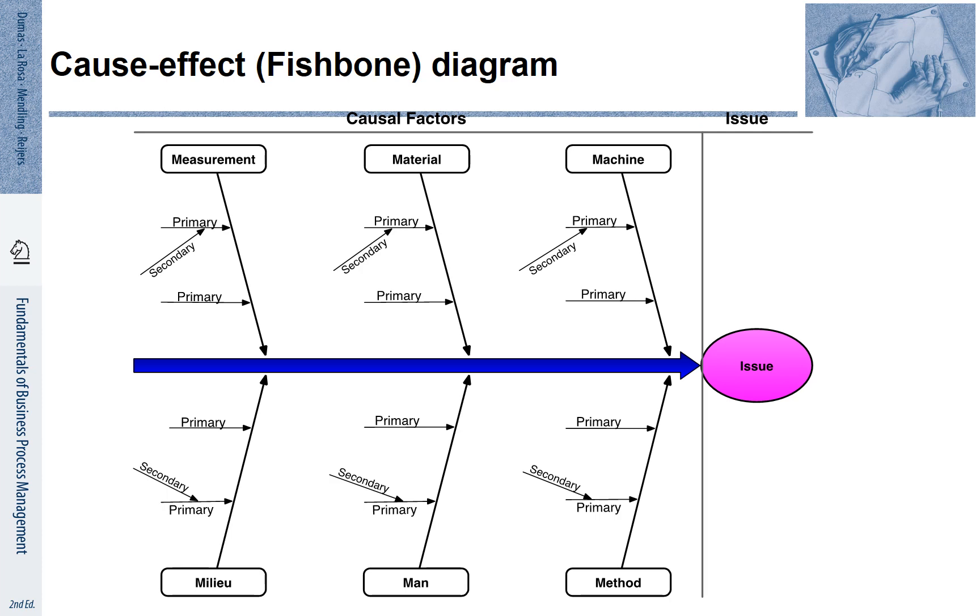The third is machine. This is any technical equipment that is involved in the process, potentially contributing to issues.